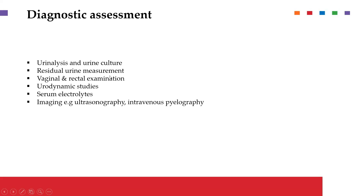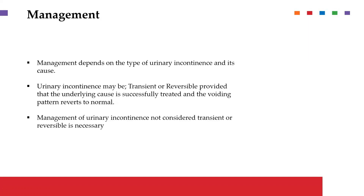The assessment carried out includes urine culture to rule out UTIs, residual urine measurement which is very important, urodynamic studies, serum electrolyte levels, and imaging to look at how the bladder is. Vaginal and rectal examination is also performed to rule out conditions such as an enlarged prostate in men, or any other condition predisposing one to having this kind of incontinence.